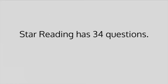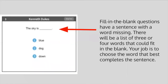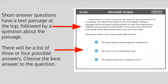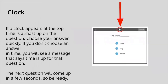STAR Reading has 34 questions. Fill-in-the-blank questions have a sentence with a word missing, and there will be a list of three or four words that could fit in the blank — your job is to choose the word that best completes the sentence. Short answer questions have a text passage at the top followed by a question, with three or four possible answers to choose from. If a clock appears at the top, time is almost up. Choose your answer quickly. If you don't choose in time, you will see a message that time is up and the next question will come up in a few seconds, so be ready.